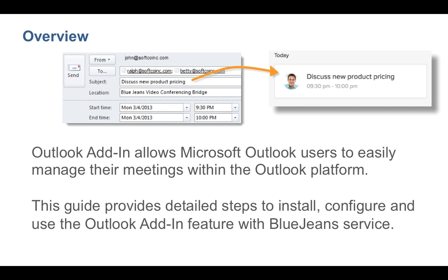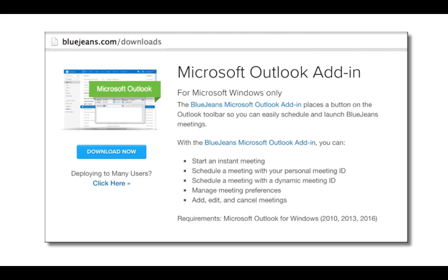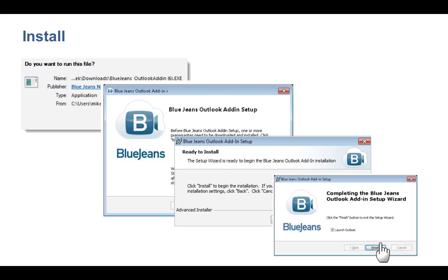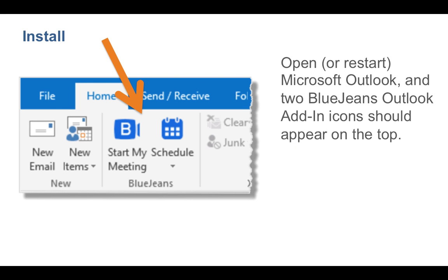You can schedule and manage your BlueJeans meetings from Outlook on Windows. Download the add-in from bluejeans.com/downloads. Follow the wizard commands to install. To finish the installation, launch Outlook. Two BlueJeans icons will appear.